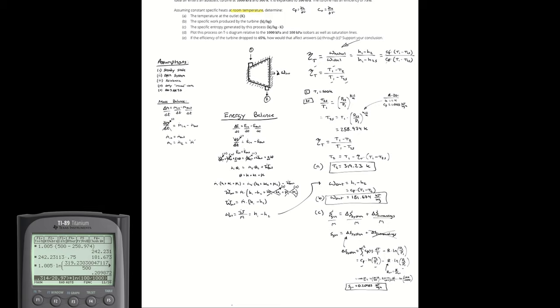So before we do part D let's actually answer part E first. How are A, B, and C affected if the efficiency drops from 75% to 65%? Think through that on your own.